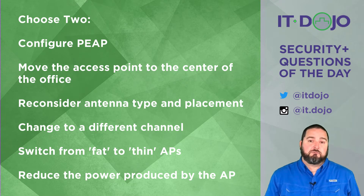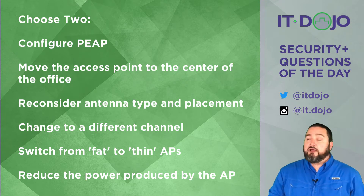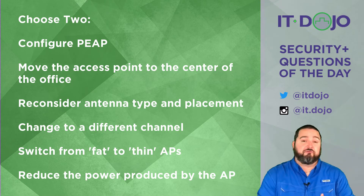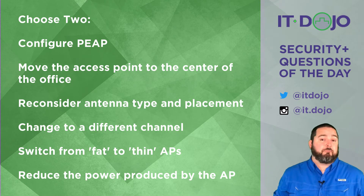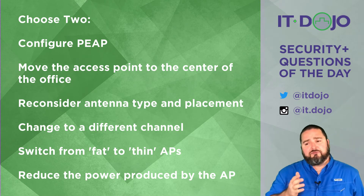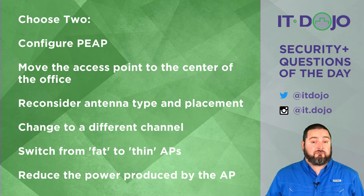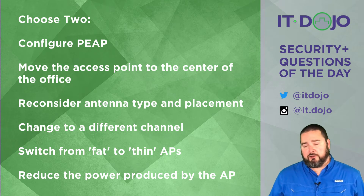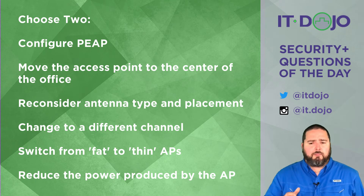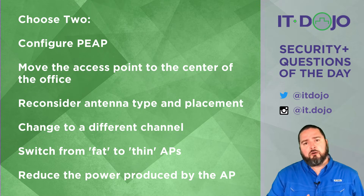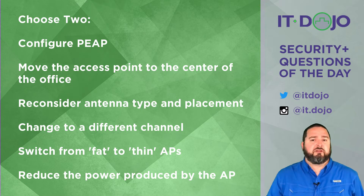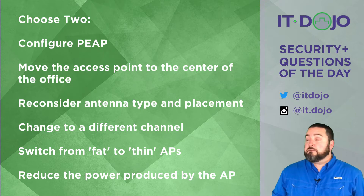Your first consideration: configure PEAP, or Protected EAP. Configuring Protected EAP is going to make your wireless LAN more secure, assuming you're not already using something stronger — but it's not going to do anything in terms of your RF cell size. So no, configuring Protected EAP is not going to help you as far as cell sizing.